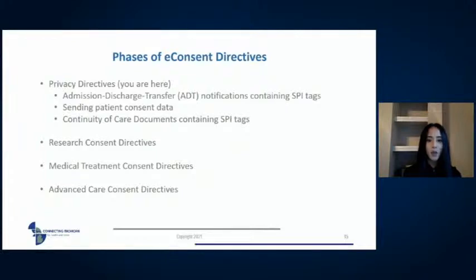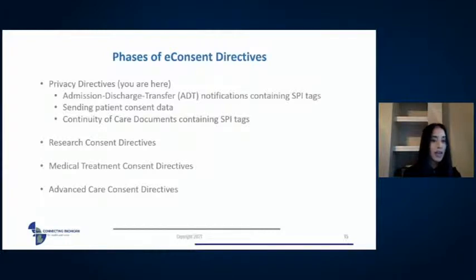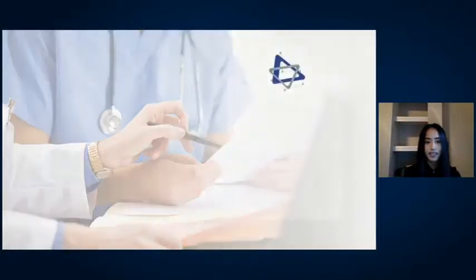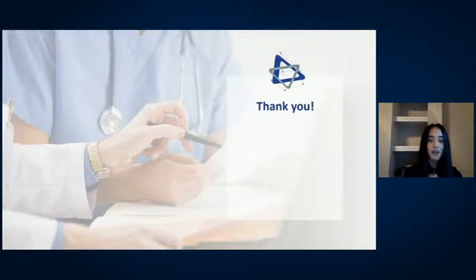Here is a roadmap on how we want to accomplish the different variations of e-consent we'd like to accommodate. Right now it's very privacy-focused — allowing us to share previously siloed information, really focusing on behavioral health. We do plan to move to things like consent to share information for research purposes, consent to share information for medical treatment, and the sharing of advanced care directives integrated into this as well. That's all I have on the history and evolution of our e-consent products.